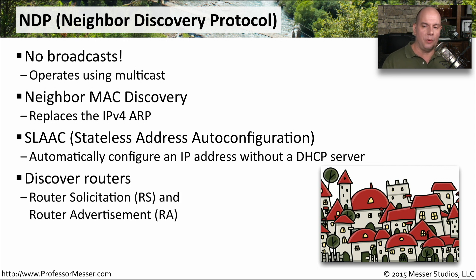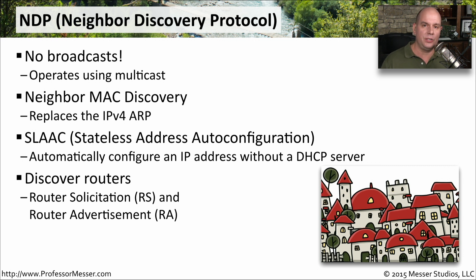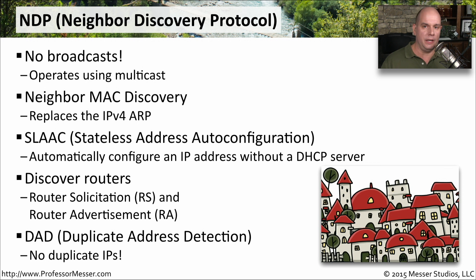The Neighbor Discovery Protocol can also be used to find out where your local routers are. It uses a router solicitation and receives router advertisements that it can then use to configure your local workstation. This is also used to find duplicate addresses — you don't want to configure yourself automatically with an IP address and then find there is a duplicate on the network. So the Neighbor Discovery Protocol also handles DAD, or duplicate address detection, as well.